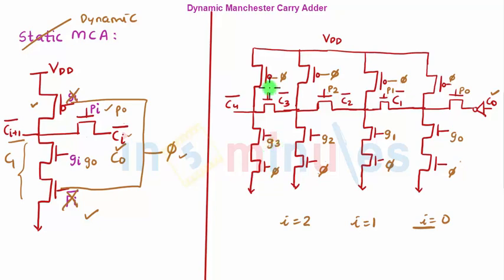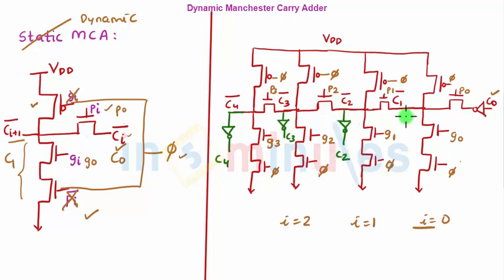This completes the 4-bit dynamic Manchester carry adder. To get carry outputs in their true form, connect an inverter at the output of each stage: inverters give C1, C2, C3, and C4 respectively. It's a very straightforward extension. Hope you followed — stay tuned for further clips, and thank you very much.